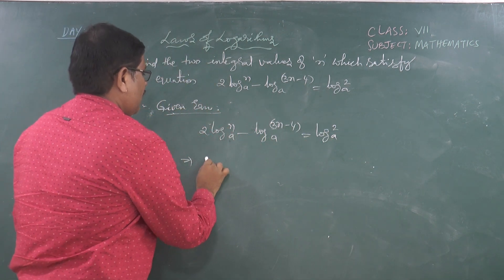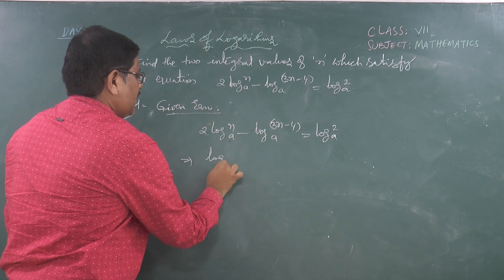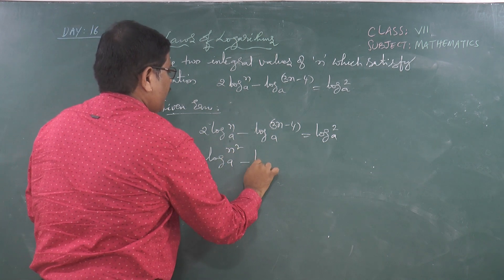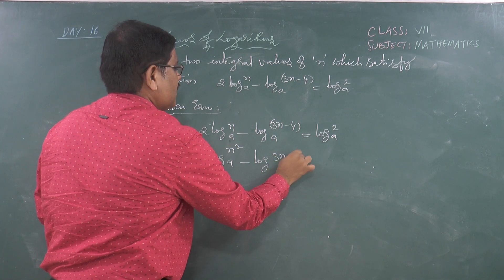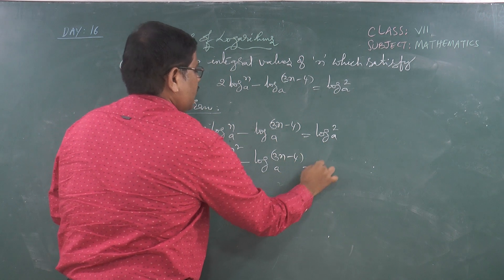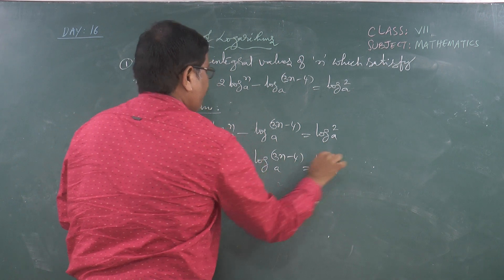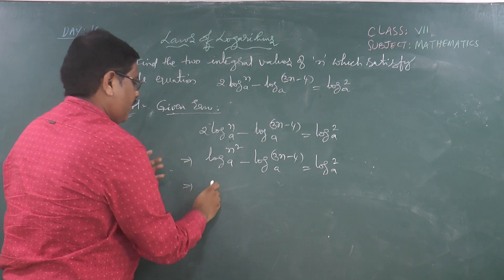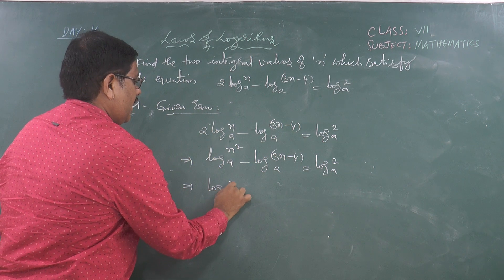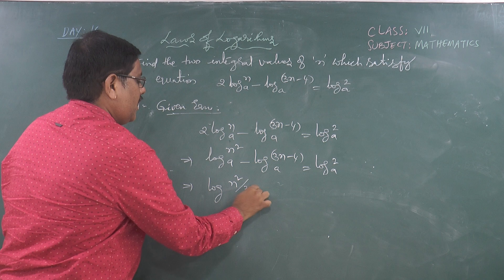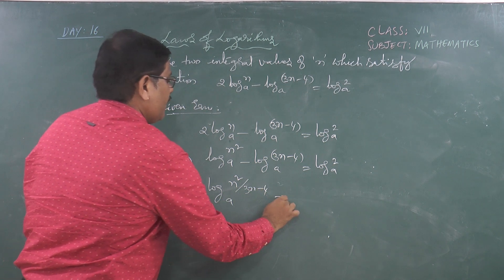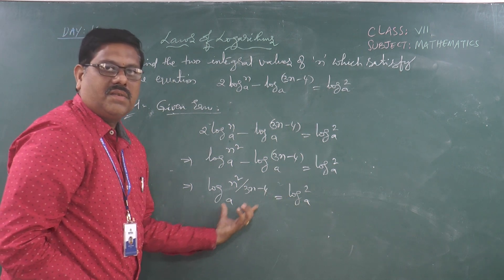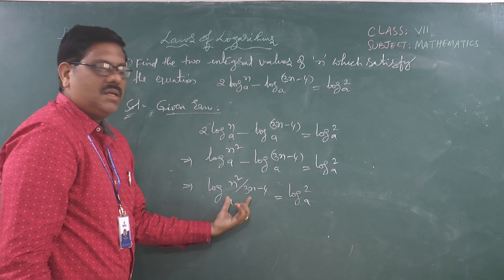Let us start solving. The given equation is: 2 log n to the base a minus log (3n minus 4) to the base a equals log 2 to the base a. Applying the law of powers, we rewrite 2 log n as log n² to the base a, minus log (3n minus 4) to the base a, equals log 2 to the base a. Applying the second law of logarithms, we get log [n²/(3n minus 4)] to the base a equals log 2 to the base a. On either side of the equality, we have log of the same base.